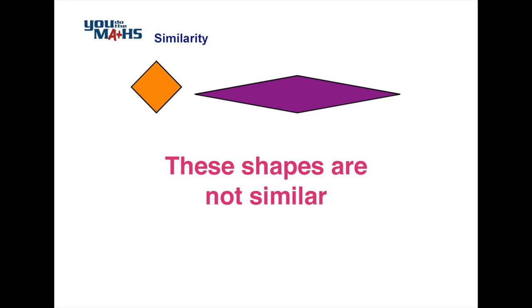For shapes to be similar, all of the lengths must increase by the same factor. In other words, if they're doubled, every single side must be doubled. Also, the angles in the shape must be maintained. The angles in one shape, the smaller one, must be the same as the angles in the larger one, and in this case the angles are not the same.